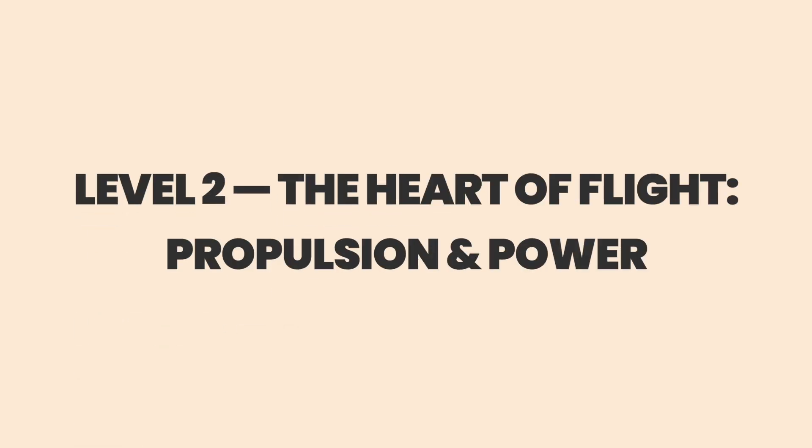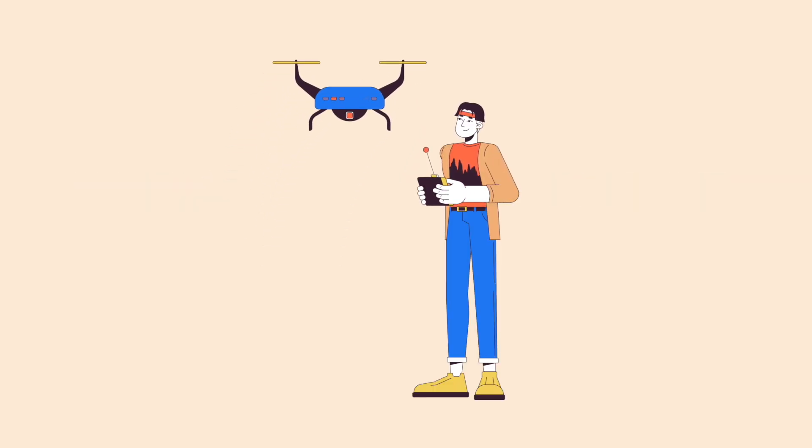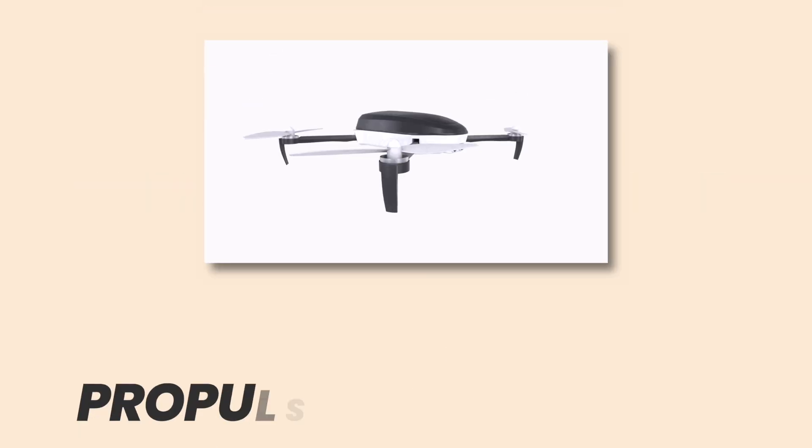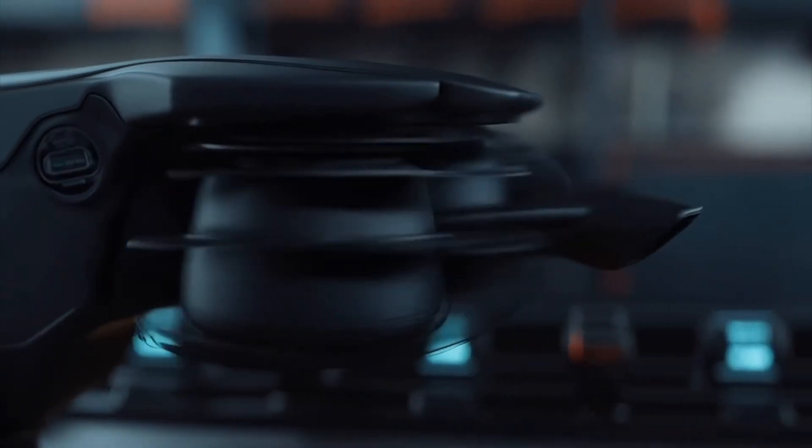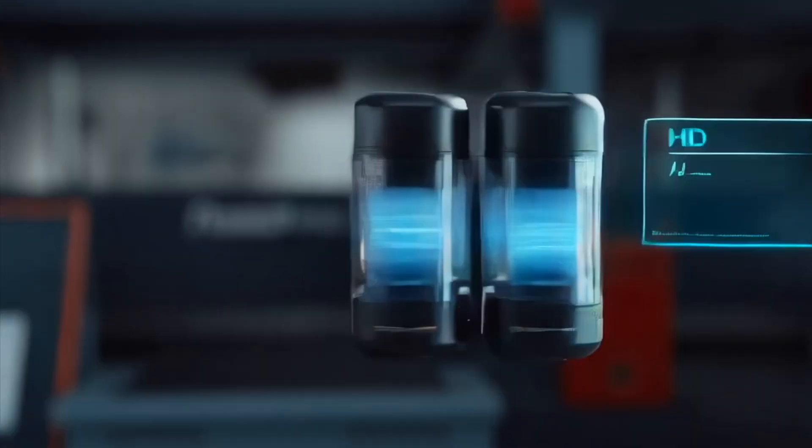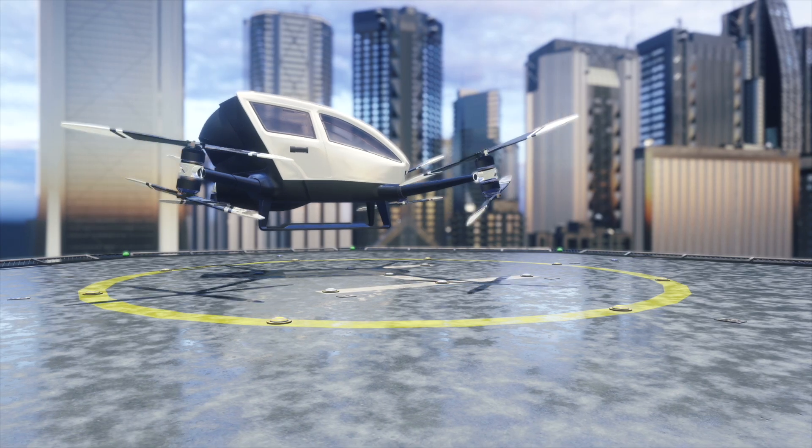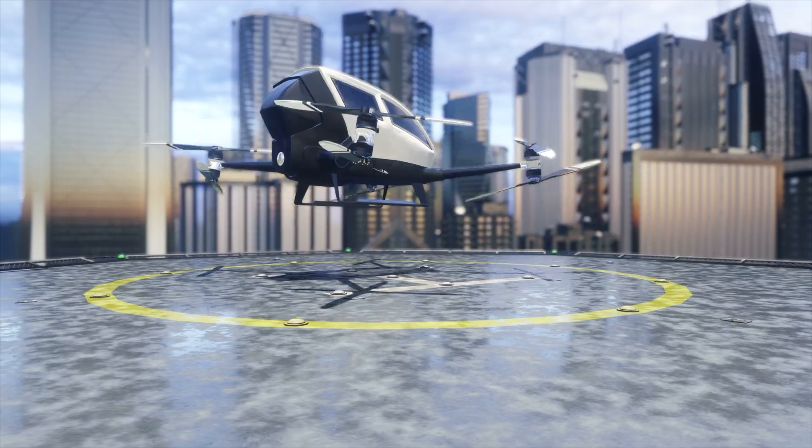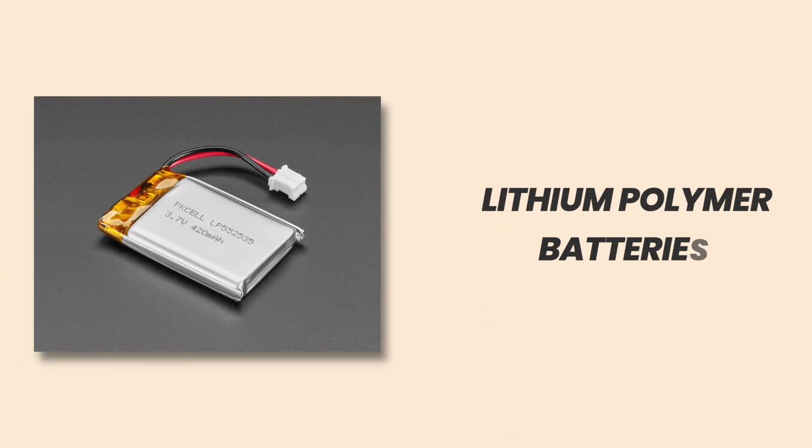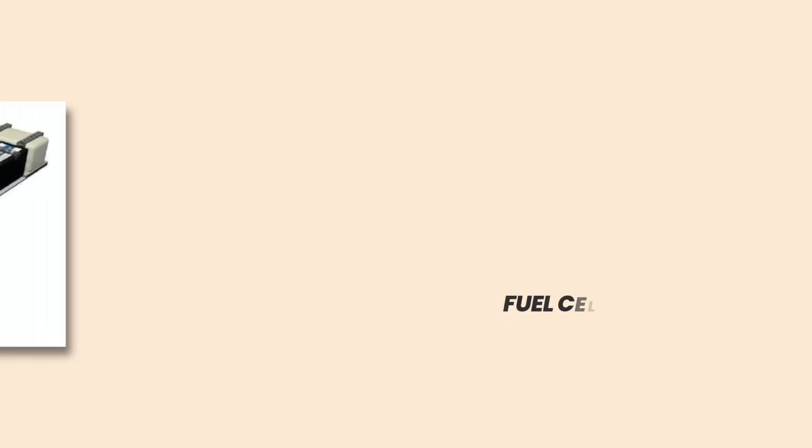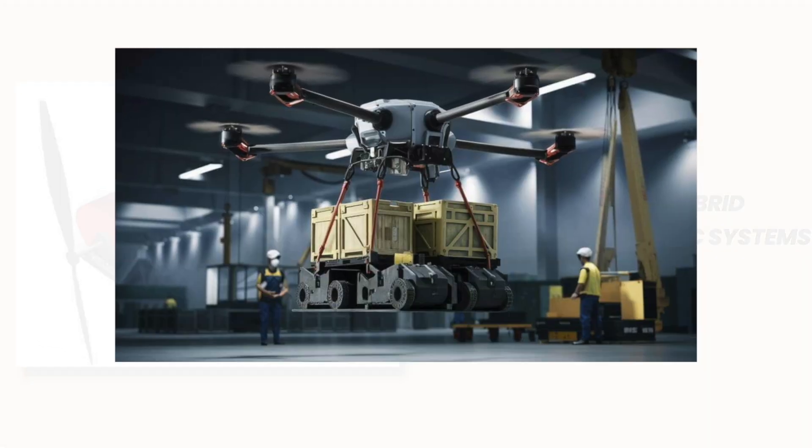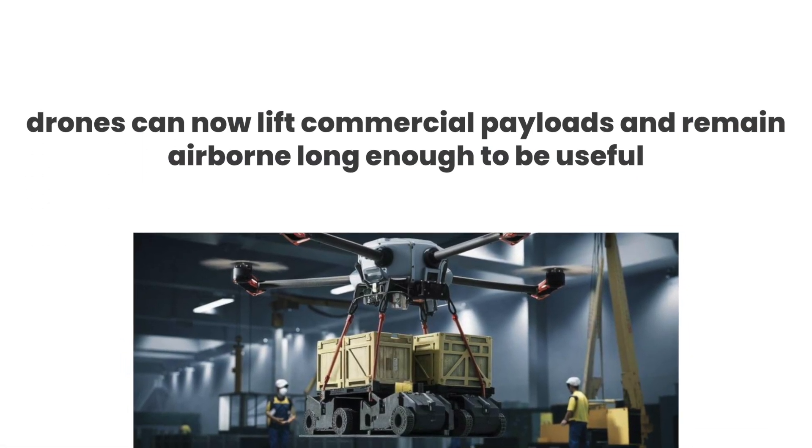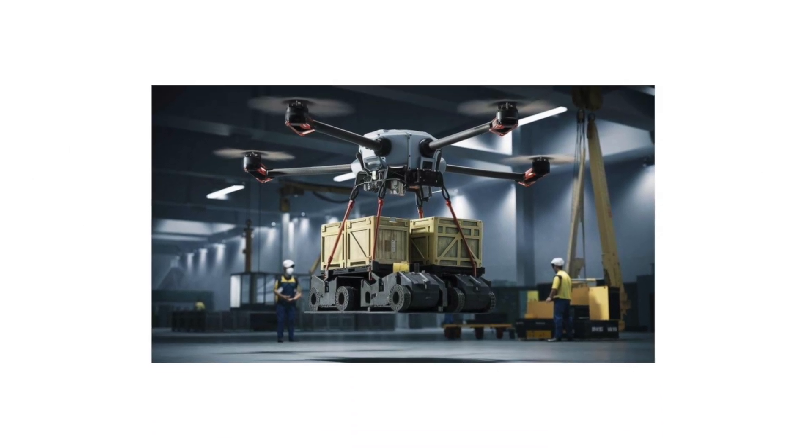The heart of flight. Propulsion and power. If a drone's brain is its flight controller, its beating heart is propulsion and power. The evolution of brushless direct current BLDC motors, matched to high-efficiency electronic speed controllers, gave drones thrust curves that were once the domain of much larger aircraft. Combined with high-energy density lithium polymer batteries and increasingly fuel cells or hybrid combustion electric systems, drones can now lift commercial payloads and remain airborne long enough to be useful.